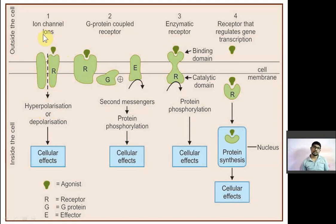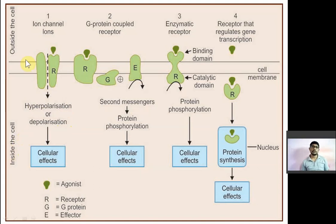From outside the cell, these ions will go inside the cell and will change the inside cell membrane potential. Suppose it is a neuronal cell and inside the neuronal cell there is a negative potential. Now suppose that sodium will go inside — sodium is a positive cation — so it will change the inside potential, known as depolarization. These ion channel functions will be modified by the drug, causing either depolarization or hyperpolarization, and then you will get a cellular effect.